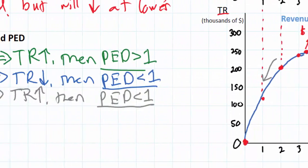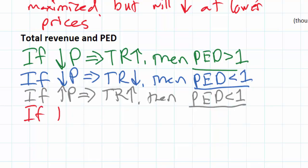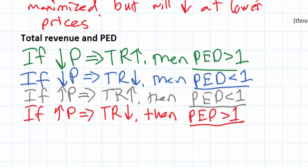So we can add a point of analysis here. If an increase in price leads to a decrease in total revenue, then PED is greater than 1. This is a very quick and relatively simple way of determining whether demand for a good between two prices is relatively elastic or relatively inelastic.